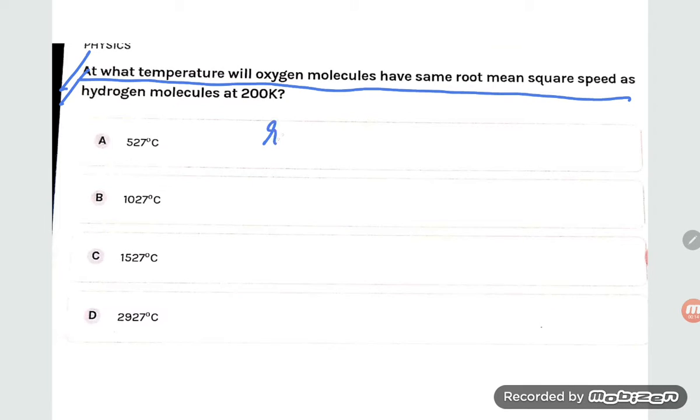So what is the formula? RMS is equal to square root of 3RT by M. So if you are asking that RMS for O2 is equal to RMS for H2.